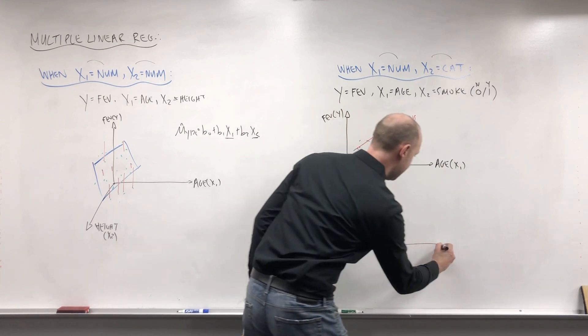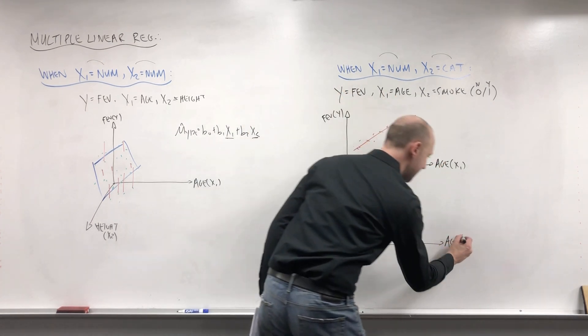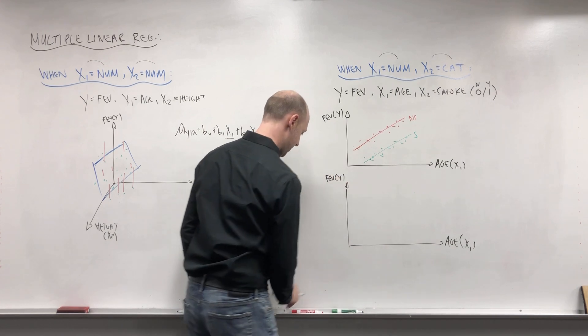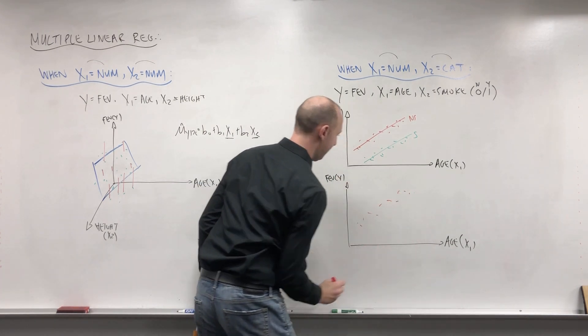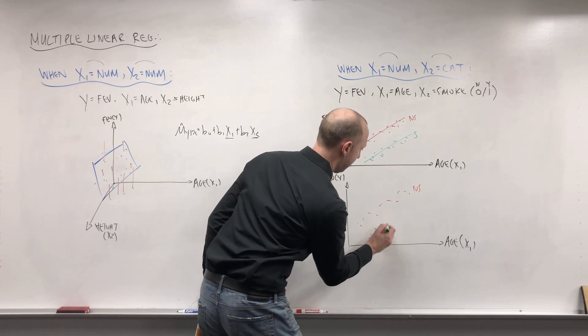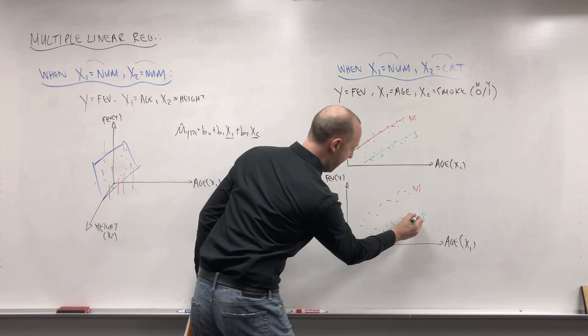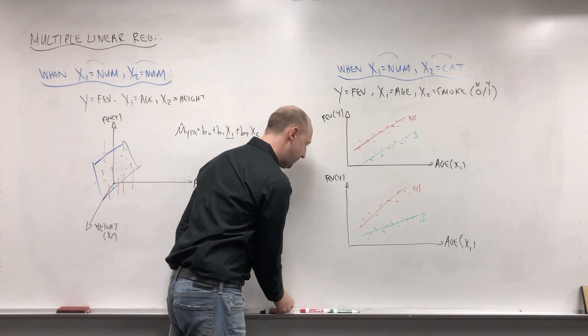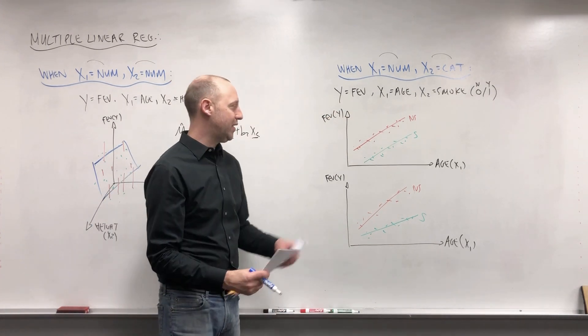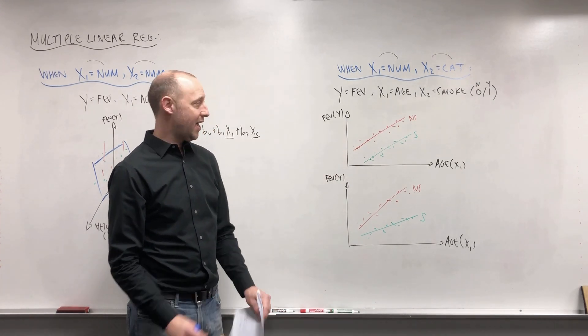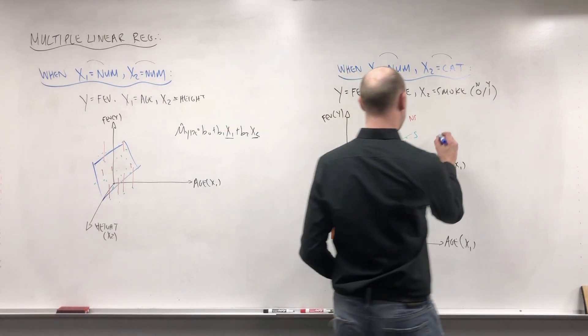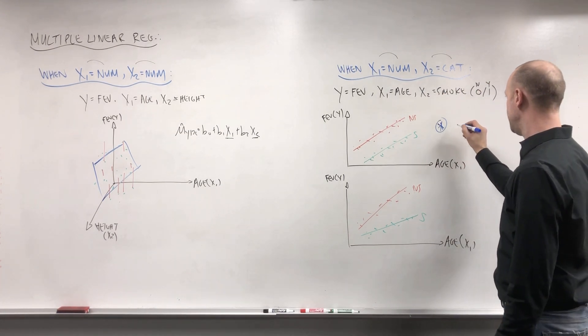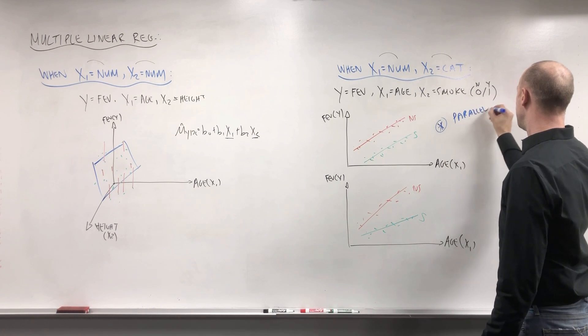Now one important difference, one important thing to talk about is here I've made the two lines parallel. We can also have, here's the non-smokers and here's the smokers, and we can fit the models having non-parallel lines. We'll talk about the difference between forcing the lines to be parallel versus allowing them to have different slopes as we progress through the course. What I want to say for now without getting too far down the rabbit hole is this parallel lines, I guess write that, parallel lines,